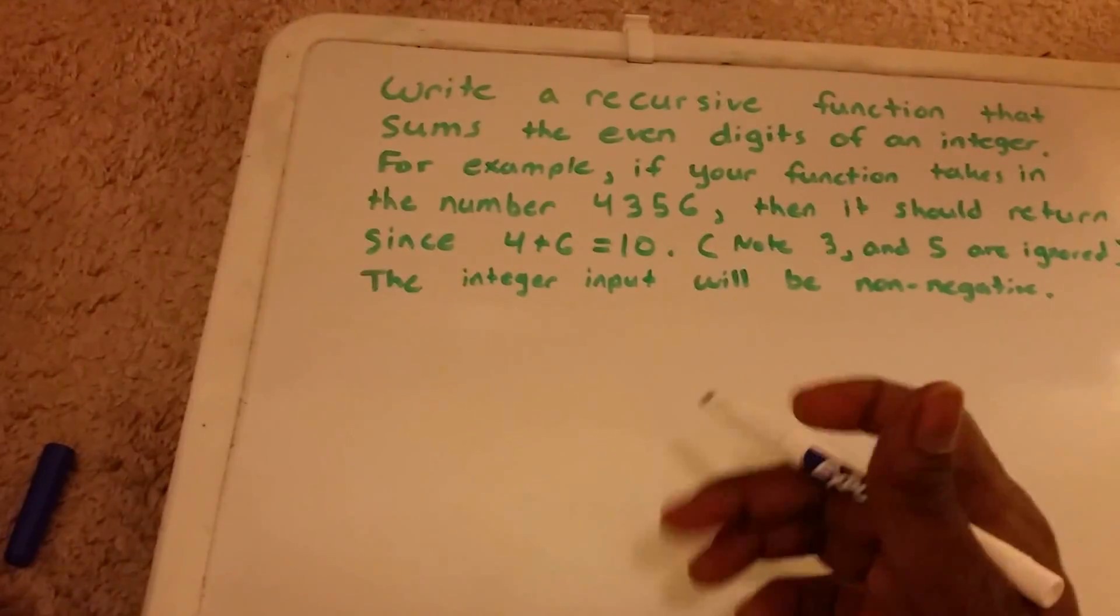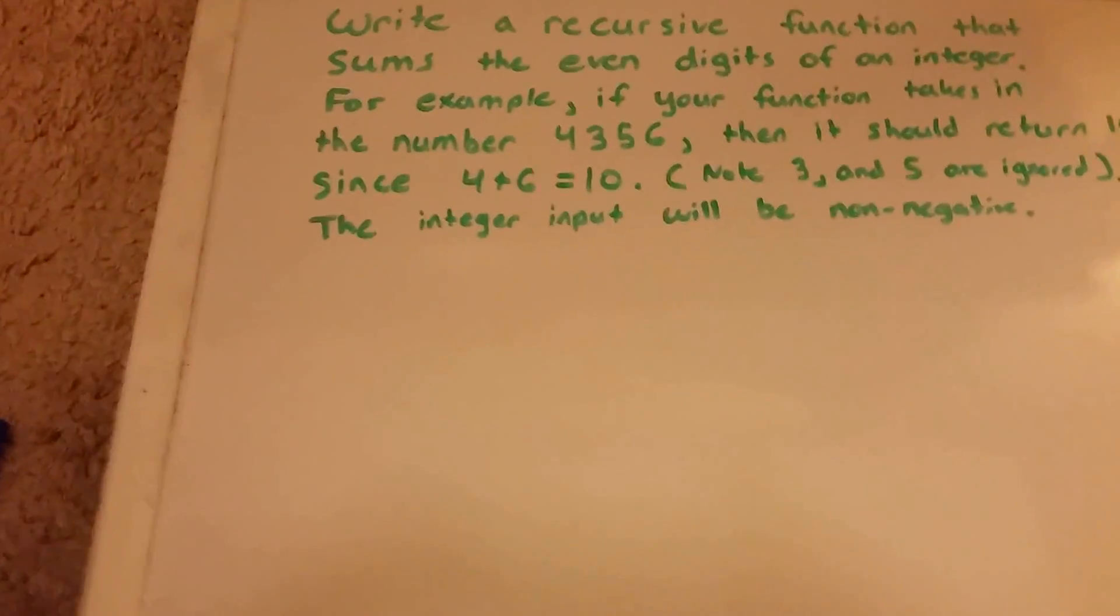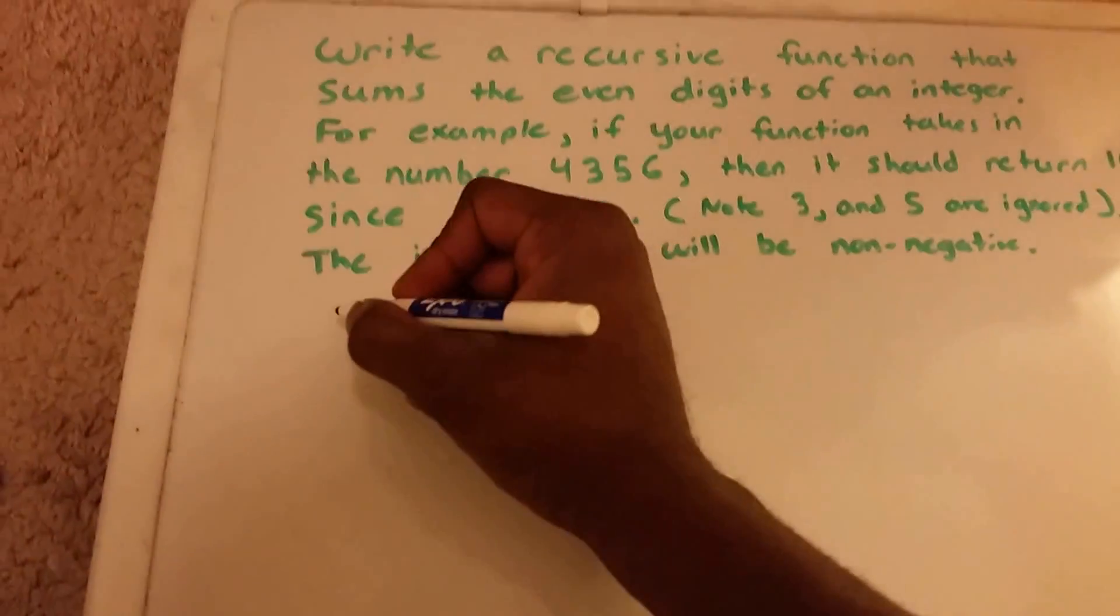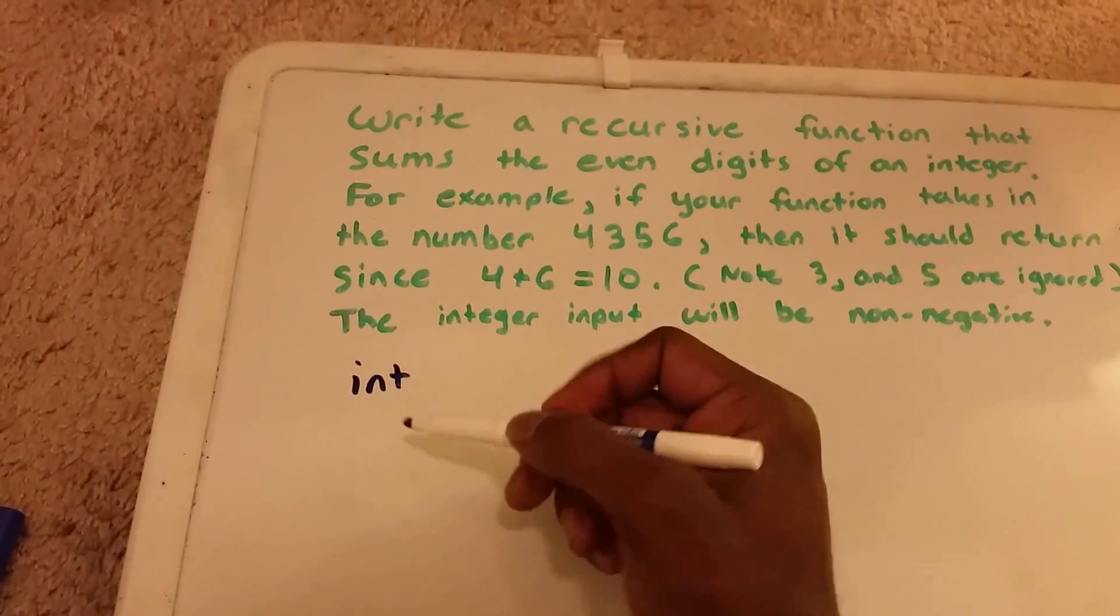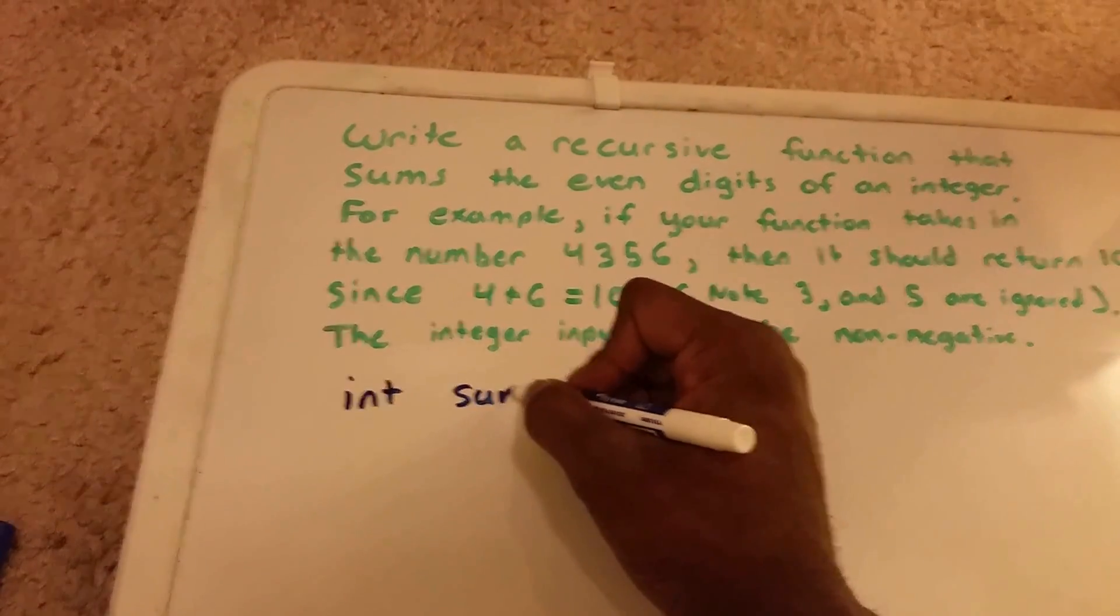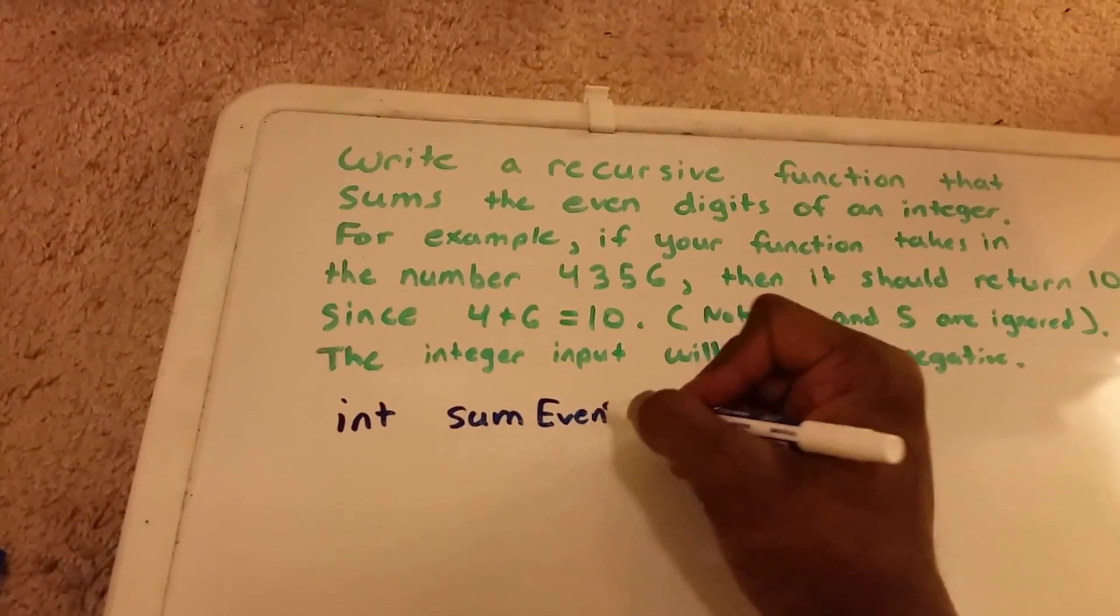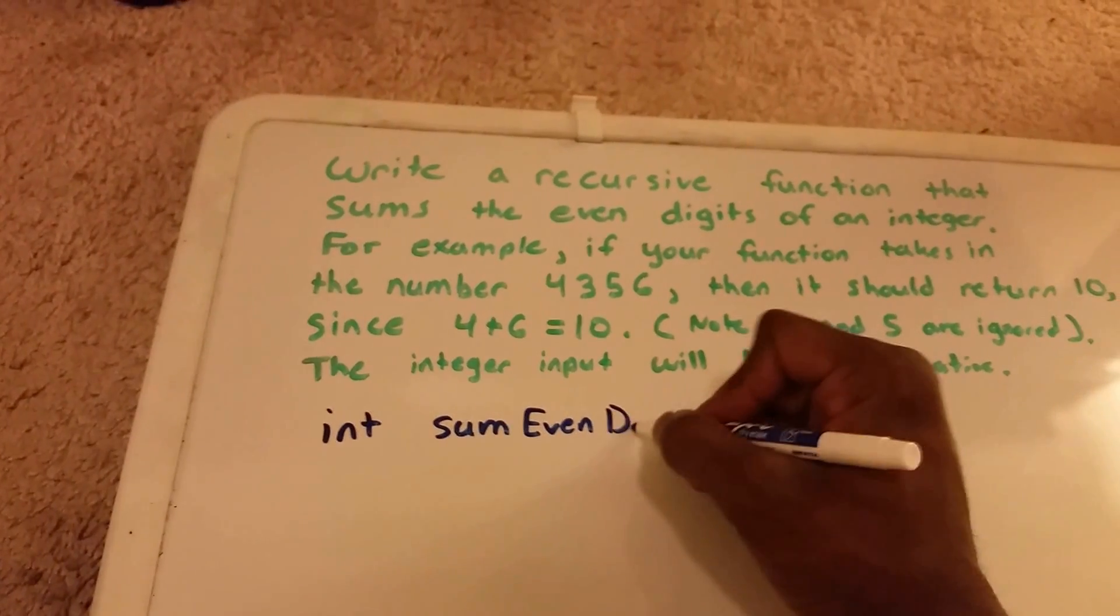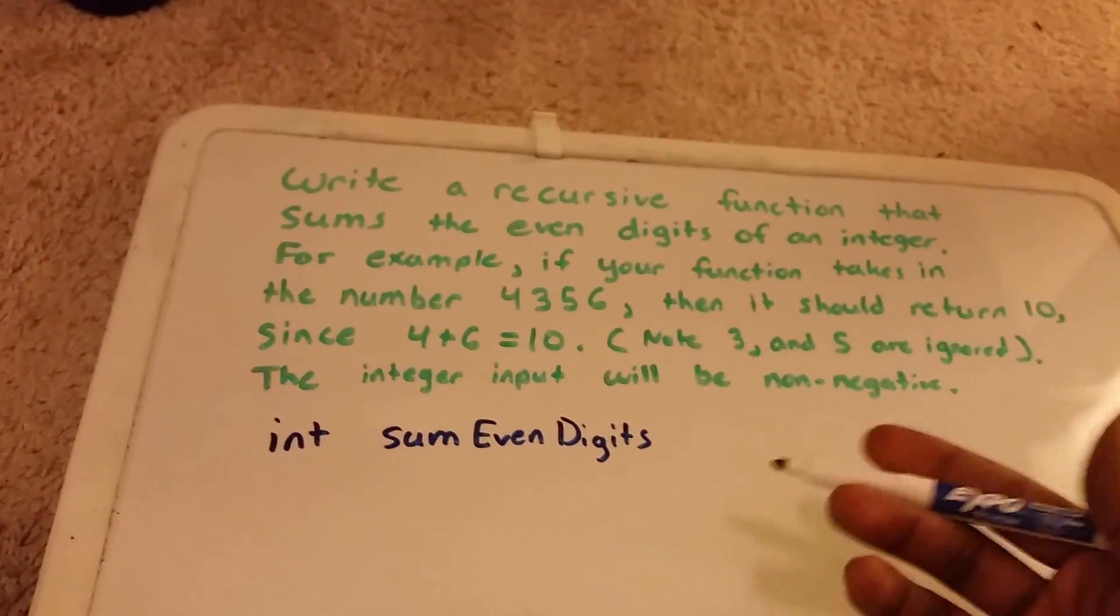Okay, so let's go ahead and get started here. First I'll come up with a function name. We're going to return an integer, so I have int here for what we're going to return. And I'm going to call it SumEvenDigits.